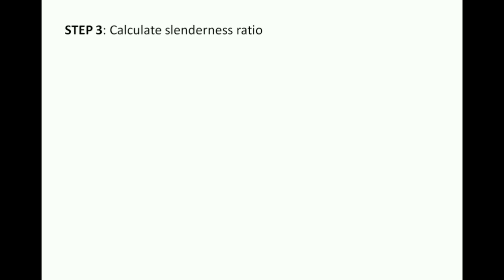Step 3 is to calculate the slenderness ratio, which is effective length divided by the minimum radius of gyration. Using the KL value just calculated and r_min from the section properties obtained in Step 1, the slenderness ratio KL/r = 43.582.